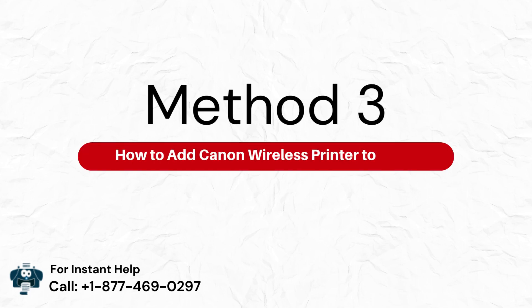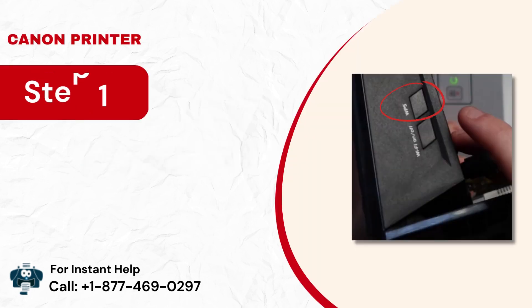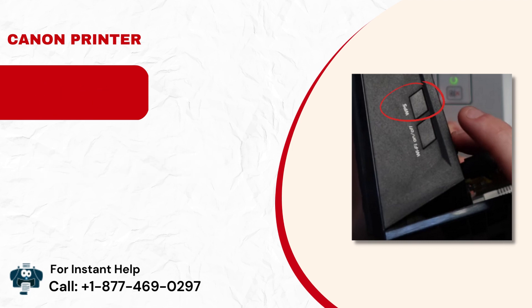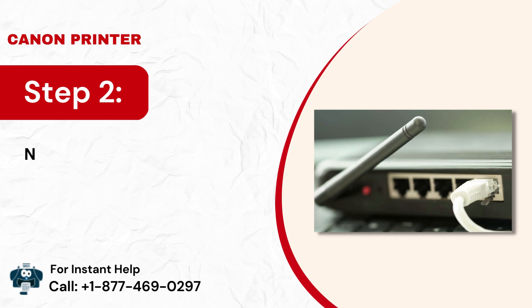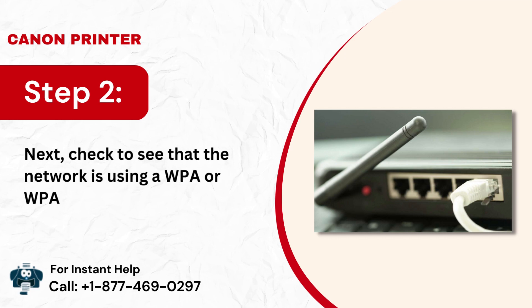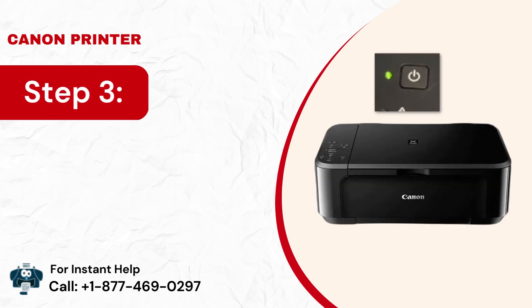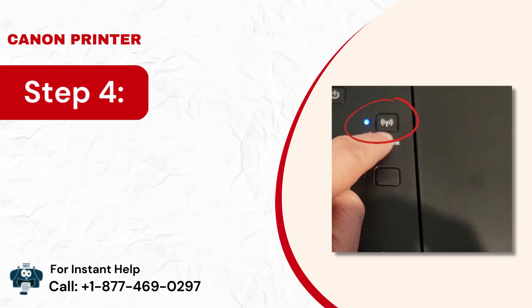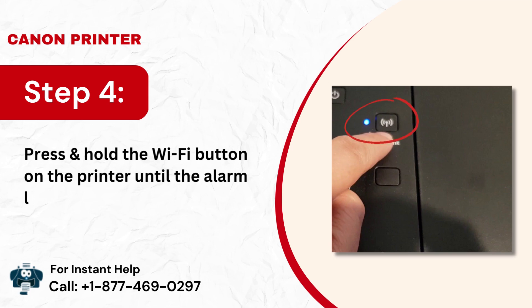Method 3: How to add Canon wireless printer to Mac. Step 1: First, ensure that the router has a physical WPS button. Step 2: Next, check to see that the network is using a WPA or WPA2 security protocol. Step 3: Now, make sure that the printer is turned on. Step 4: Press and hold the Wi-Fi button on the printer until the alarm lamp flashes once.